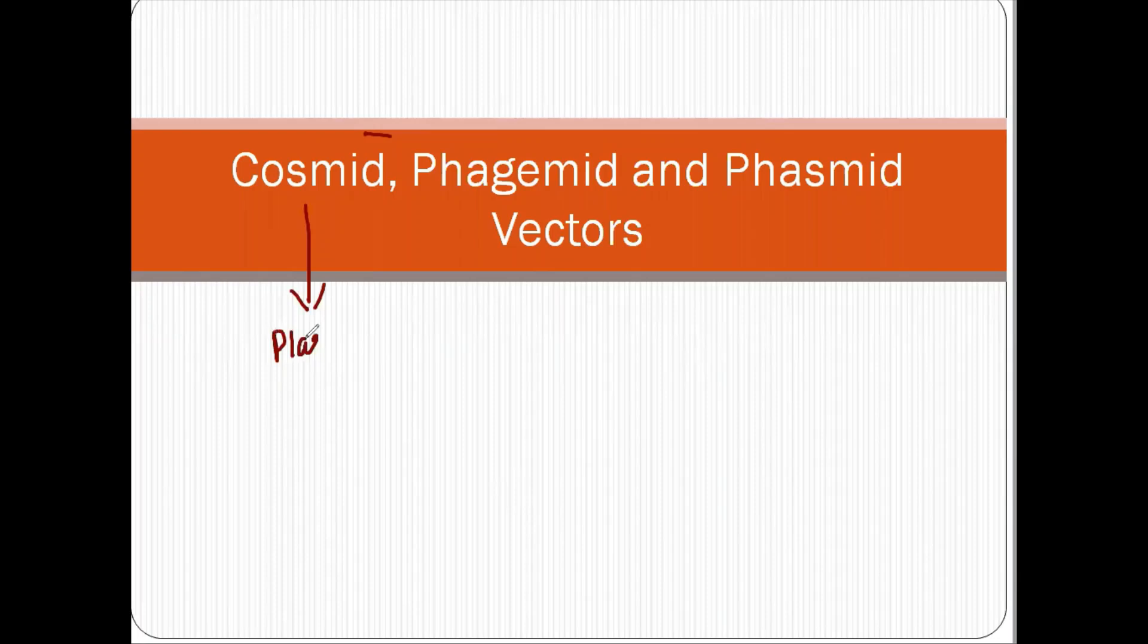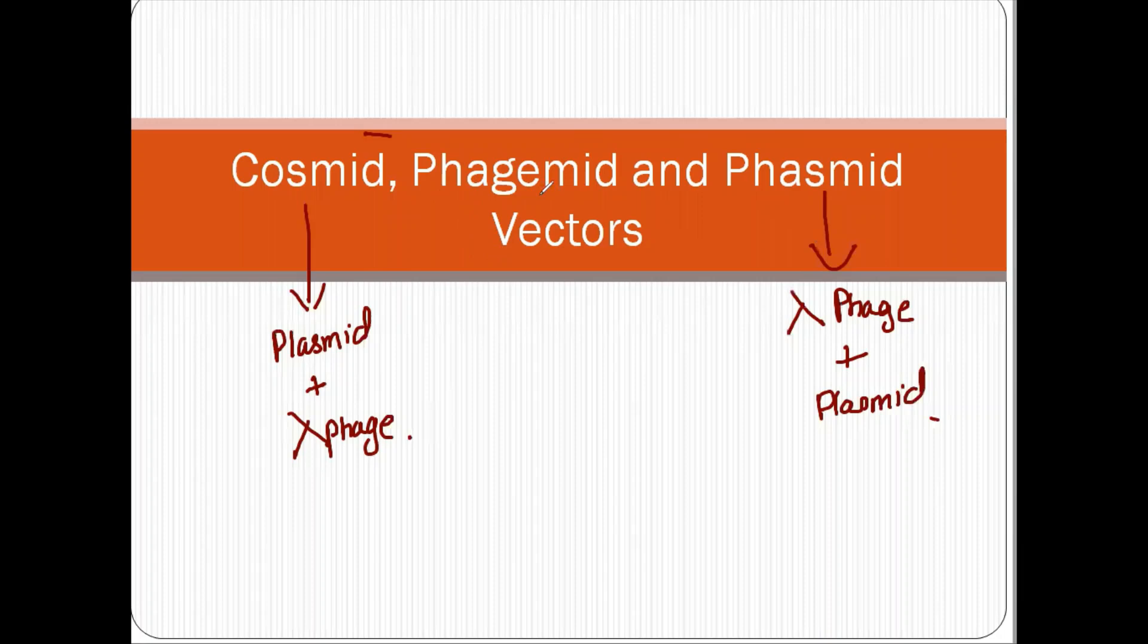How? See, this cosmid vector, it's actually a plasmid, but it has a lambda phage in it. Similarly, this phasmid is actually a lambda phage, but it has a plasmid in it.